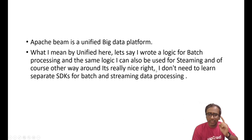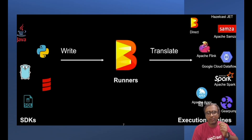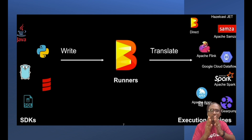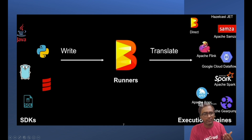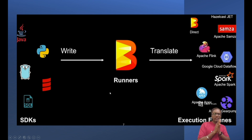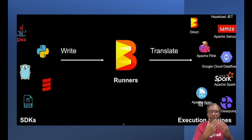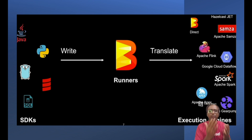There's one more beauty of Apache Beam: you have a choice of selecting your favorite programming language. You can use Java, Python, Golang, Scala, and recently they are also implementing SQL. On the right side you can see the execution engines where you can run your Apache Beam code — Apache Spark, Google Dataflow, Flink, and many more. The high-level architecture of Apache Beam has two major parts: the SDK, where you implement the Apache Beam programming using its APIs, and the runtime or execution engines where you deploy your Apache Beam code.